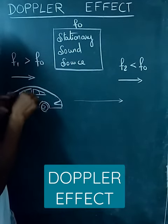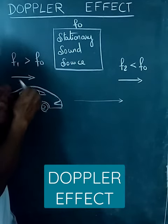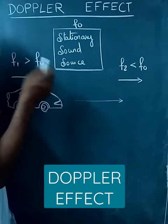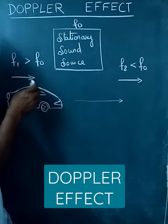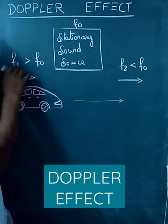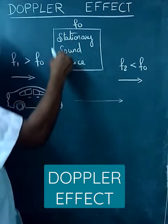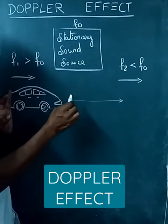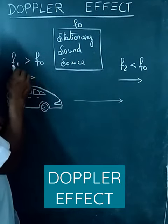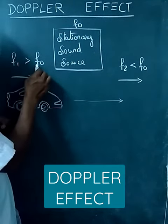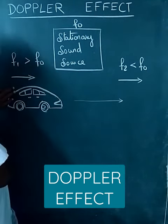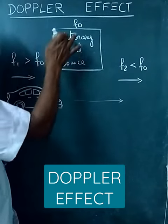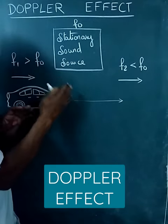The person inside the car hears the sound whose frequency is greater than the stationary sound source frequency. That means F1 is greater than F0 as the car approaches the stationary sound source.